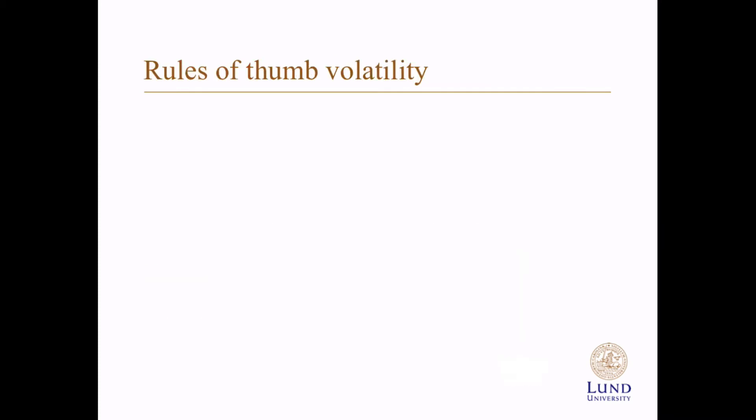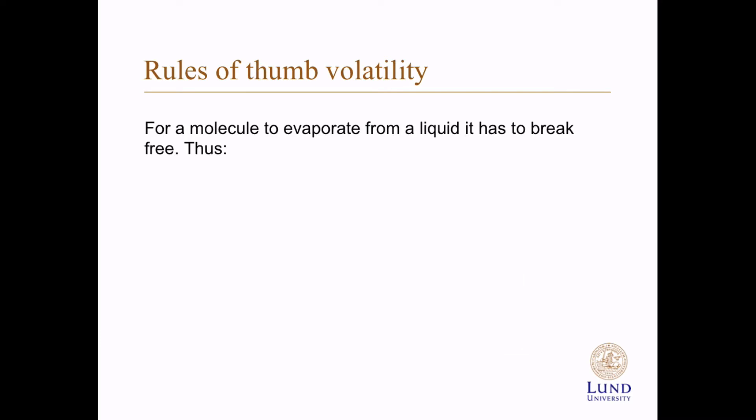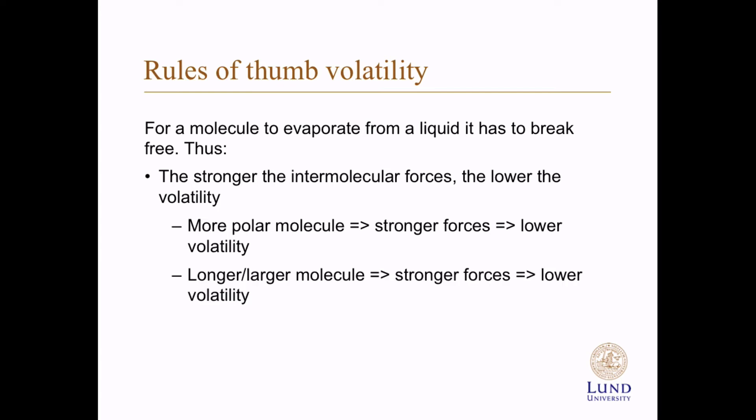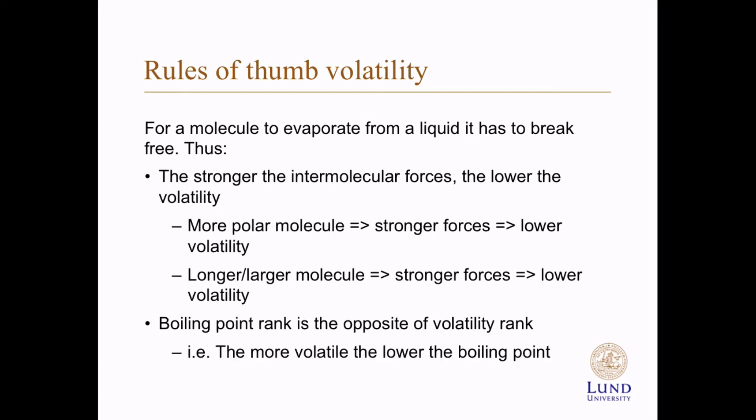That's the boiling point. Rules of thumb for volatility: for a molecule to evaporate from a liquid it has to break free, so the stronger the intermolecular forces, the lower the volatility. A more polar molecule has stronger forces between different molecules and thus a lower volatility. A longer or larger molecule also gets stronger forces between the molecules and thus a lower volatility. The boiling point rank is essentially the opposite of the volatility rank — the more volatile substances have the lower boiling point.